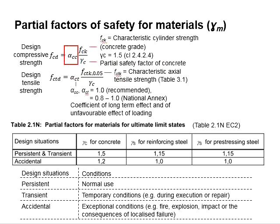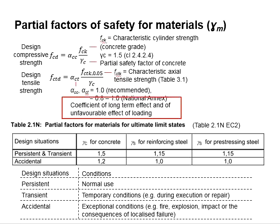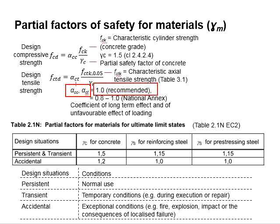There is an alpha_CC and alpha_CT there. These are the coefficients of long-term effect and of unfavorable effect of loading acting on the concrete. Alpha_CC and alpha_CT are normally taken as 1.0. A more exact number can be referred to in the National Annex, which ranges between 0.8 to 1.0.